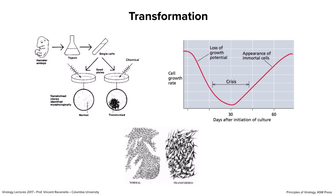If you took cheek cells from yourself, you could plate them out, they would grow 20 to 30 times and then die — they are mortal. However, in some cells, if you just let them grow, a few will survive and become immortal. You can speed up the process by treating cells with mutagenic chemicals or irradiating them, causing them to become transformed and live forever.